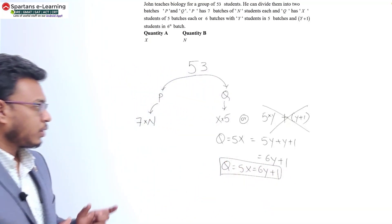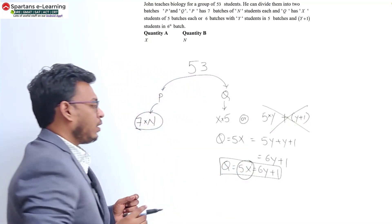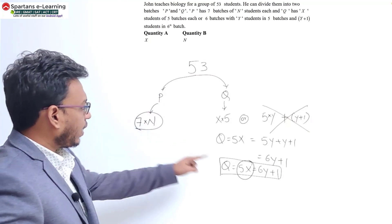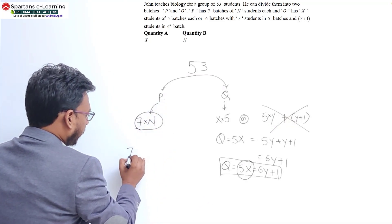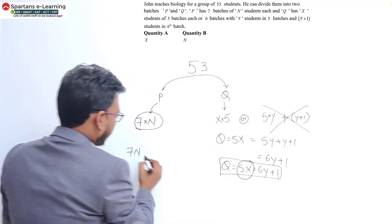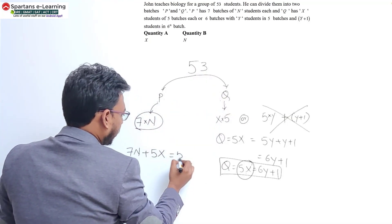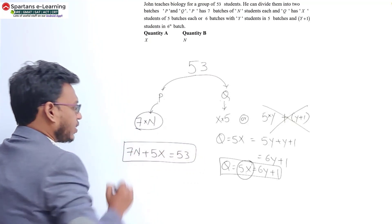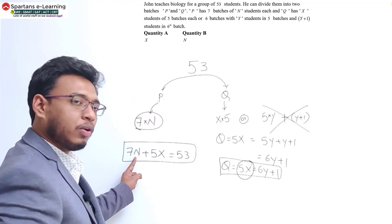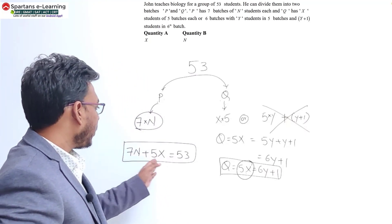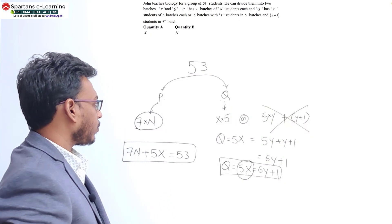Out of this data, take only what you require — the comparison between 7N and 5X. Since P equals 7N and Q equals 5X, and P plus Q equals 53, you get the equation 7N plus 5X equals 53. You have now successfully derived an equation in terms of X and N, and you can find the values of X and N using simultaneous integral solutions.